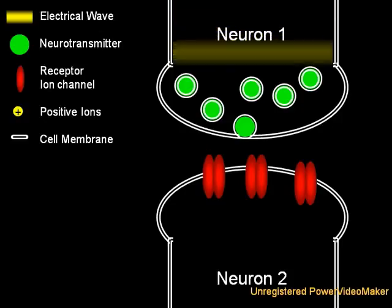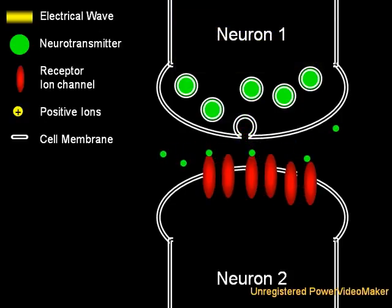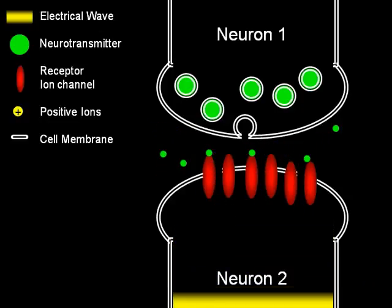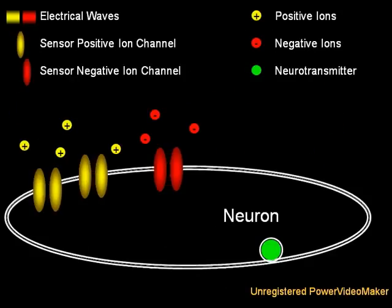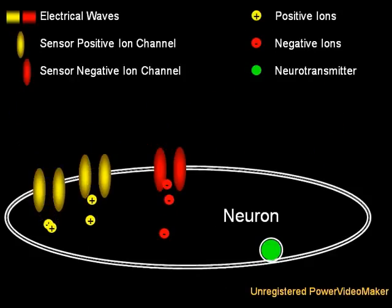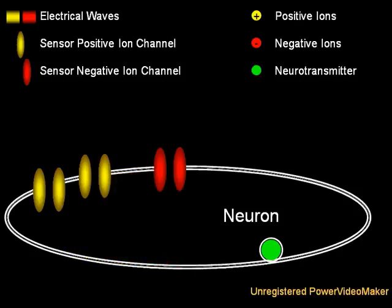Over time, through gene duplications, mutation, and natural selection, different types of neurotransmitters and receptors evolved. Some allow positively charged ions to flow into the cell leading to an electrical wave resulting in the release of neurotransmitter from that cell, and are thus termed excitatory synapses. But others allow negatively charged ions to flow into the cell. These can essentially cancel out any positive waves, thereby preventing the cell from releasing neurotransmitter, and are therefore called inhibitory synapses.